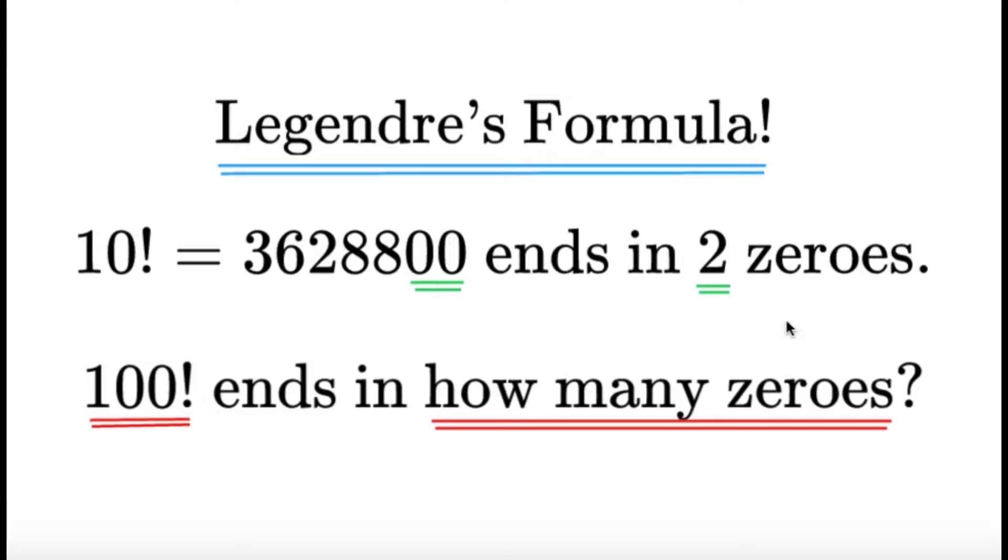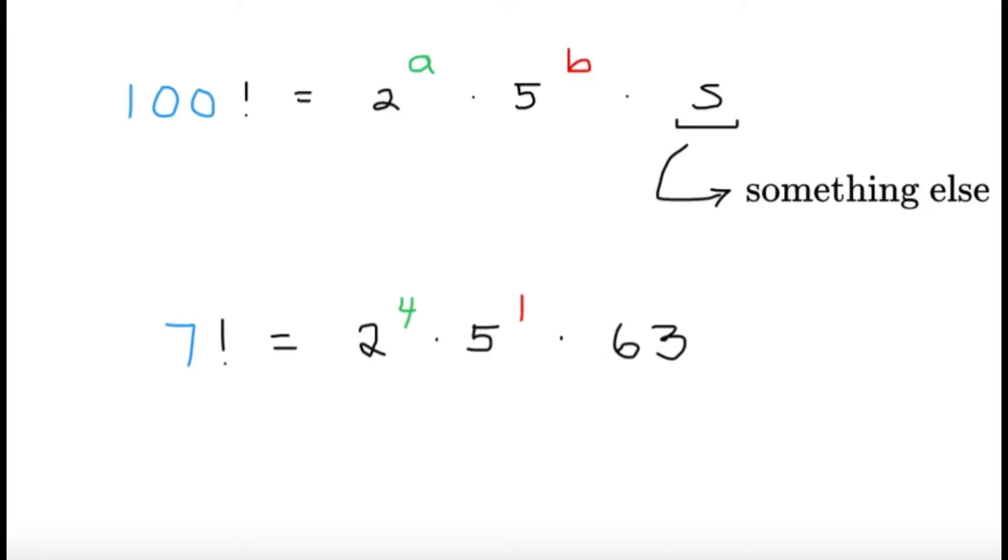Now, this question is just a simple application of the Legendre's formula, and that's going to tell you certain things about these things called the trailing zeros, or the number of zeros at the end of a number. So let's try to make some observations. Well, we're interested to know how many powers of 10 does the prime factorization of, for example, 100 factorial have.